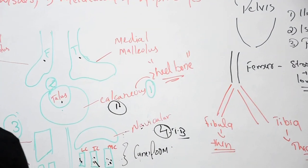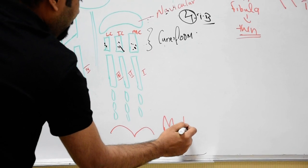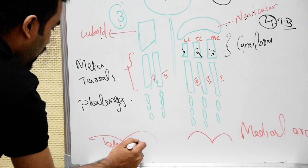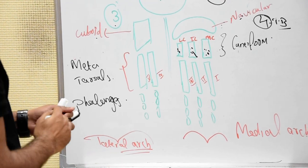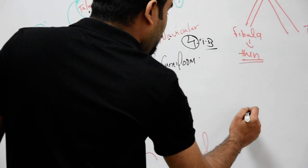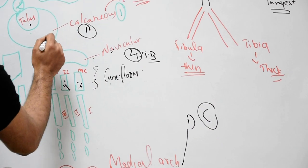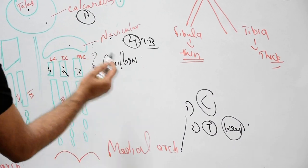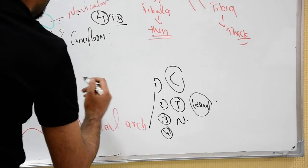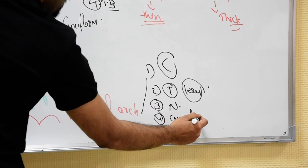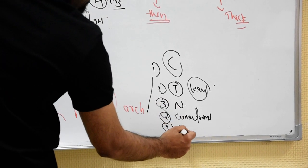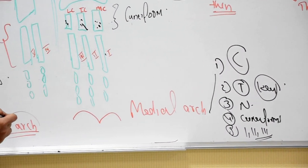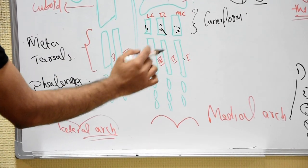The foot can be divided into a medial arch and a lateral arch. In the medial arch, the bones included are: first, the calcaneus; then the talus, which is the key bone of the medial arch; then the navicular; then the cuneiforms; and the first, second, and third metatarsals. All of these together form the medial arch.